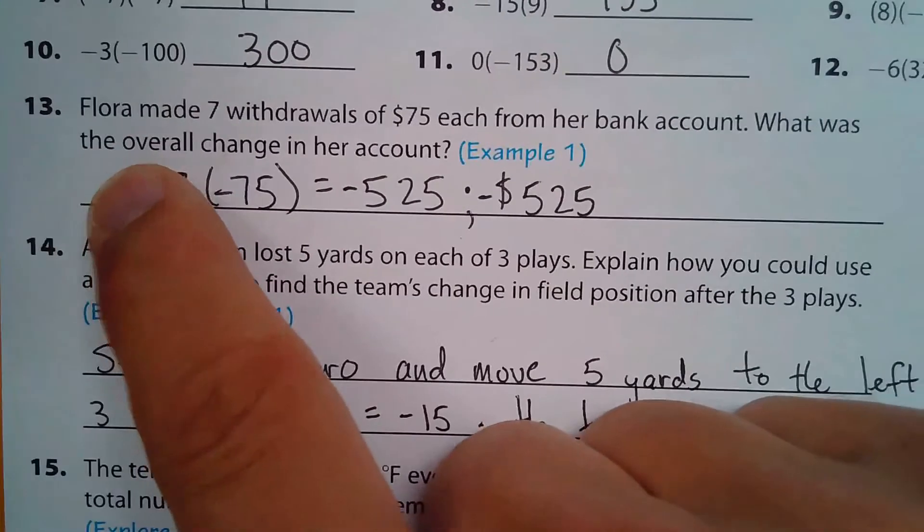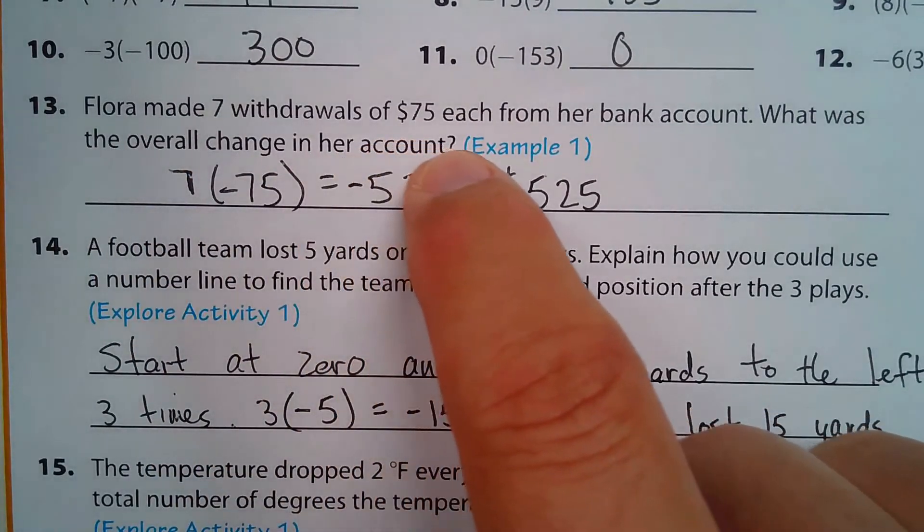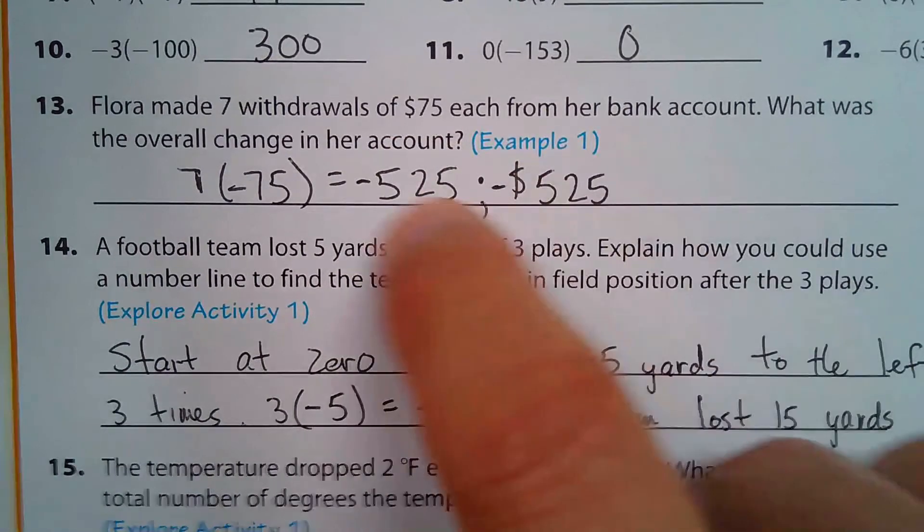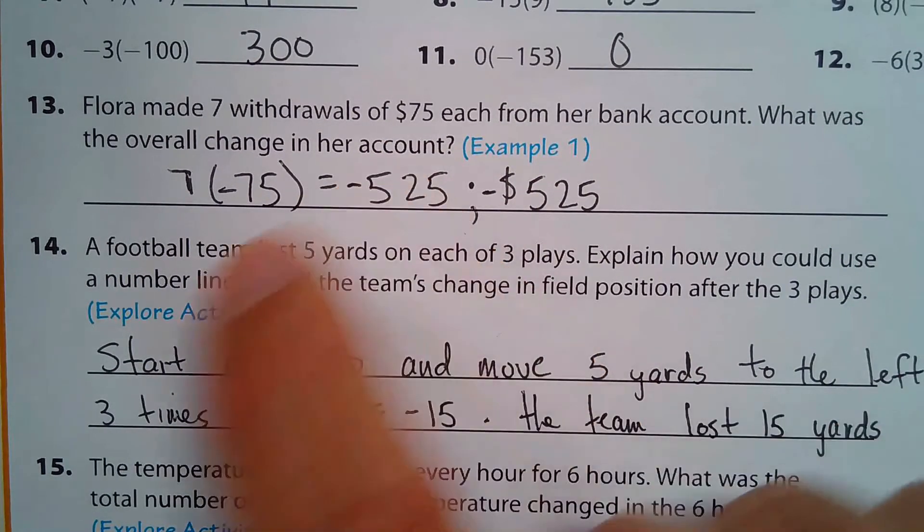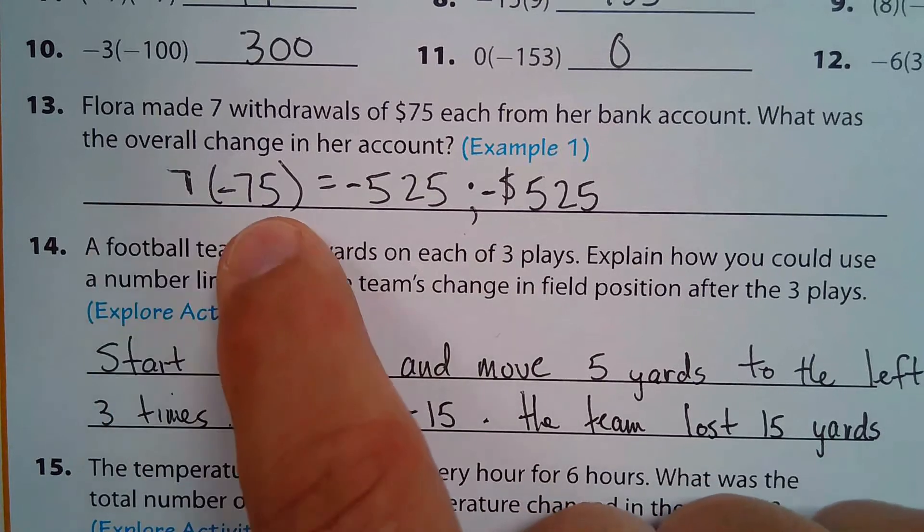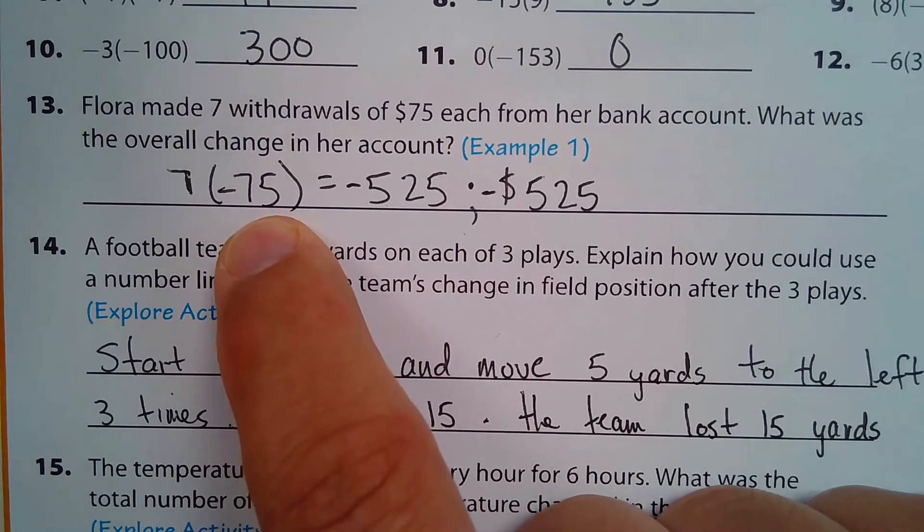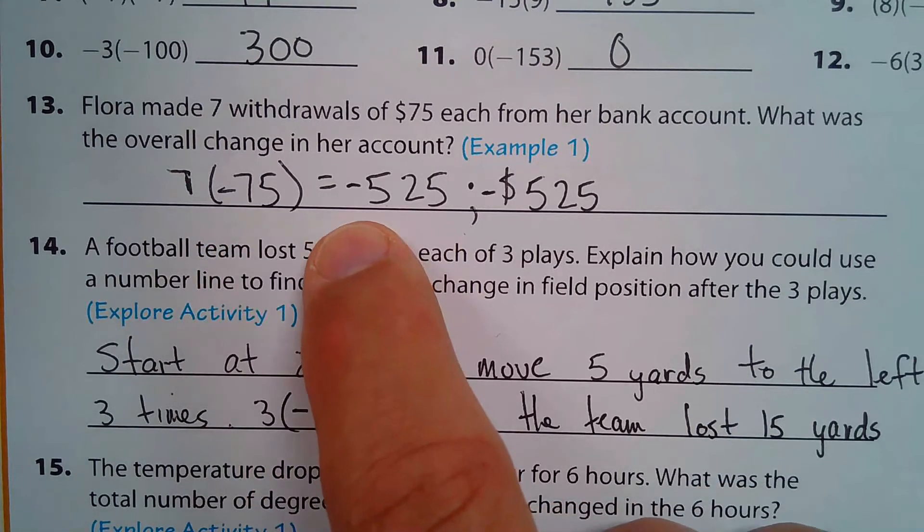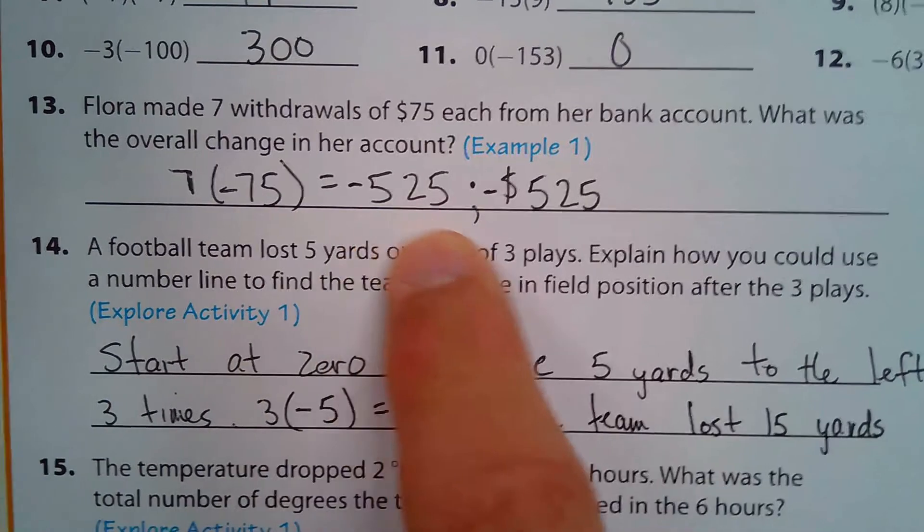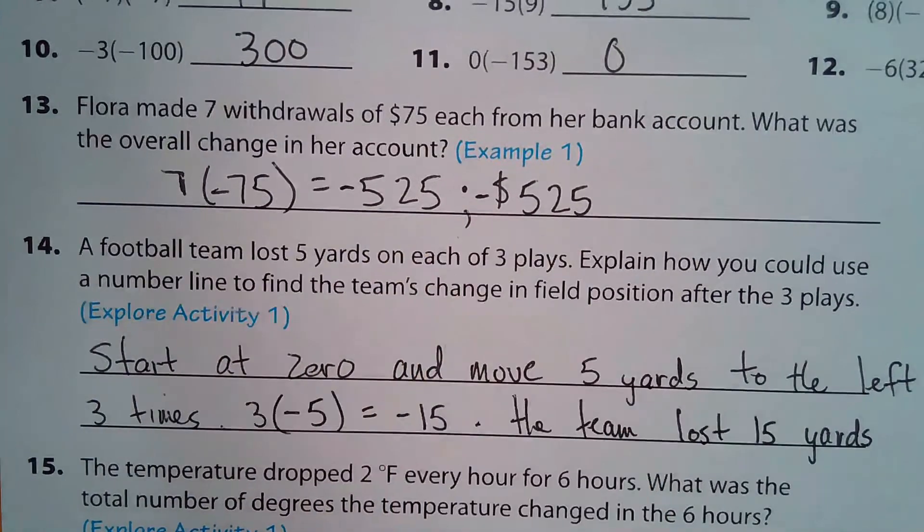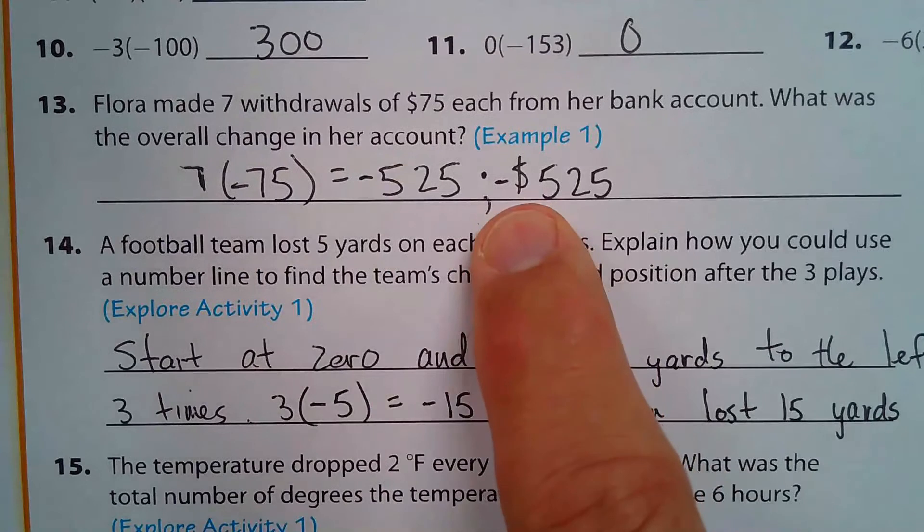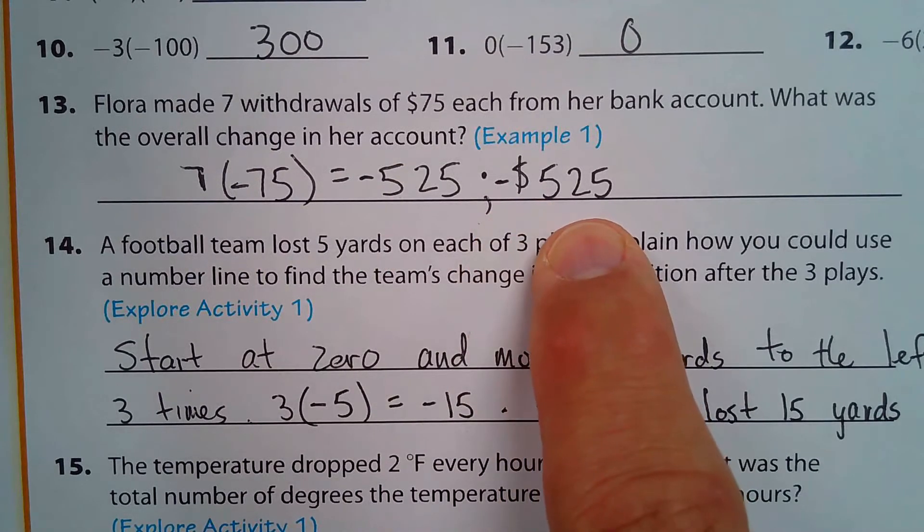And then here we have some word problems. Flora made seven withdrawals of $75 each from her bank account. What was the overall change? Seven of them, $75 each, a withdrawal—so you're subtracting money from the account. So multiplying these, that's a total of $525 removed from her account. What's the overall change? It's negative $525. If you said regular 525, then that means she's adding $525 to her account.